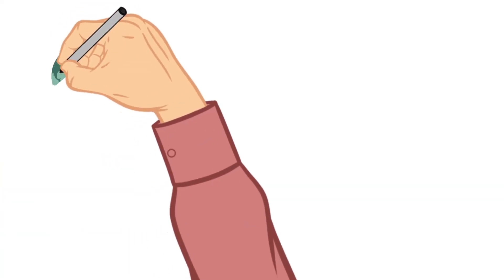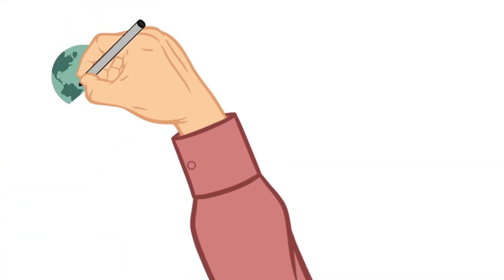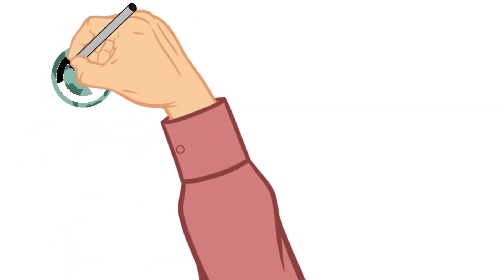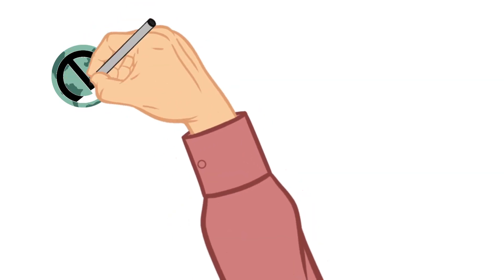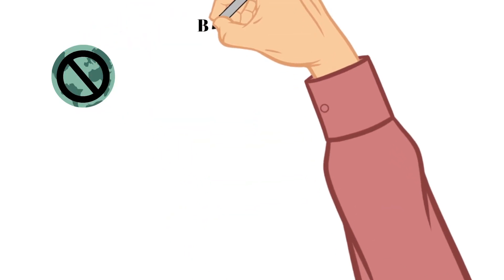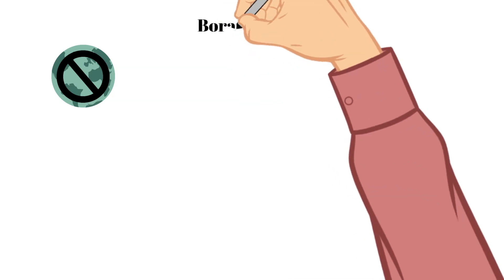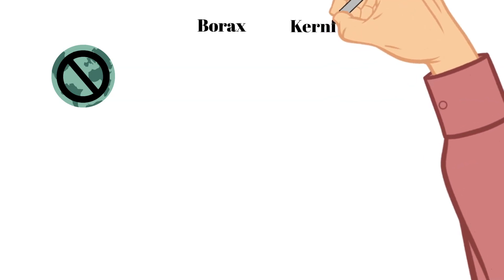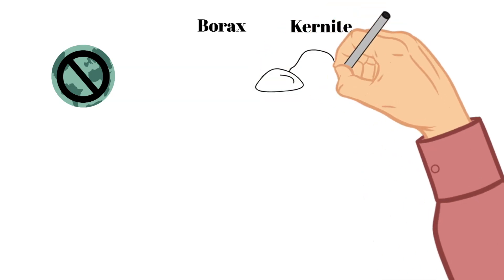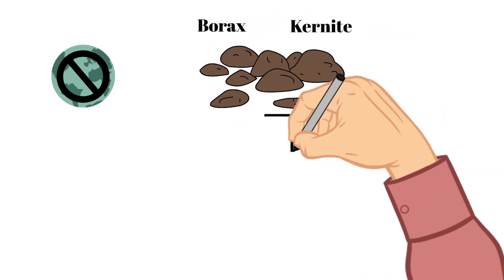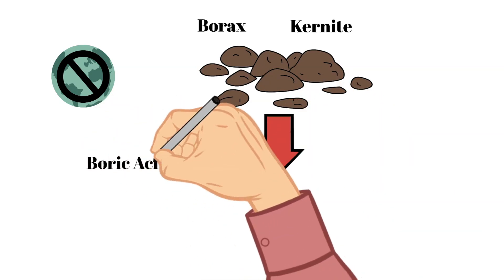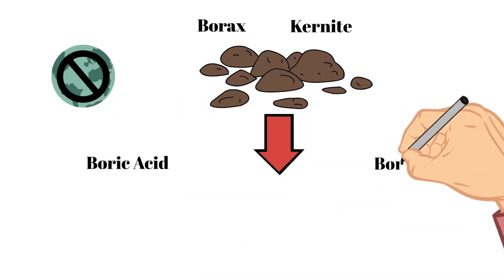Boron is pretty rare on earth. Pure boron is not even naturally found on earth, but this element is found in many different compounds. The most common compounds that boron can be found in are borax and kernite, which are found in sedimentary rock formations. Boron is often mined and refined into boric acid or borax.